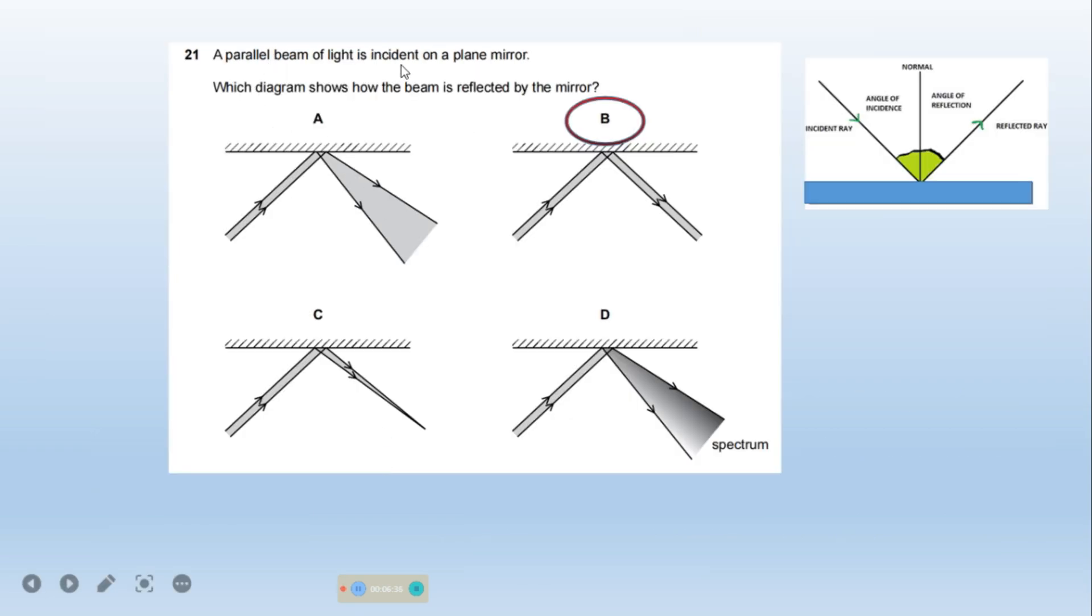A parallel beam of light is incident on a plane mirror. Which diagram shows how the beam is reflected by the mirror? So option D is right because this shows a reflection. And in reflection, angle of incidence must be equal to angle of reflection. B is the right one.